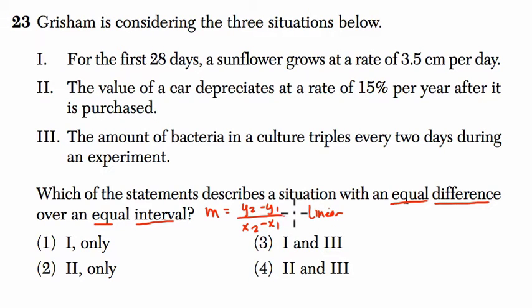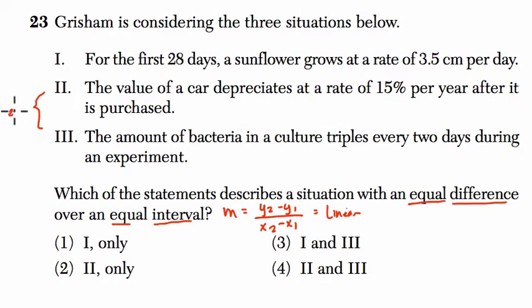In exponential situations, you'll have an equal quotient. If you divide two values over an interval, you will get a constant quotient. That's the idea of exponentiation. And that's exactly what choices two and three are. These are both exponential. But choice one is linear.